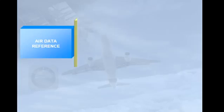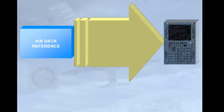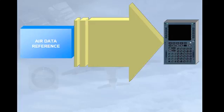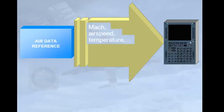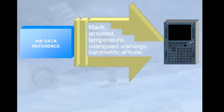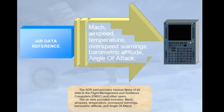The ADR part provides various items of air data to the Flight Management and Guidance Computers, FMGC, and other users. The air data provided includes Mach, Airspeed, Temperature, Overspeed Warnings, Barometric Altitude, and Angle of Attack.